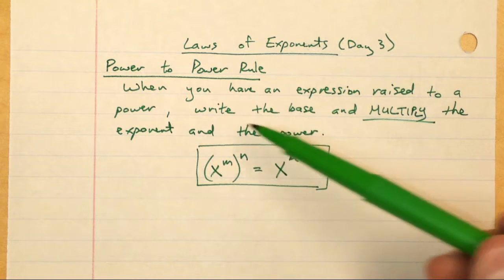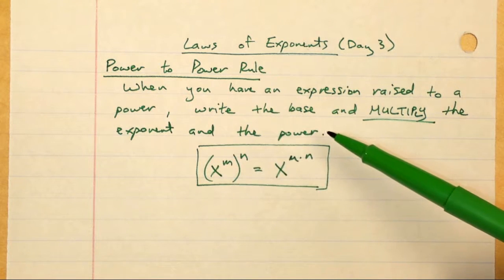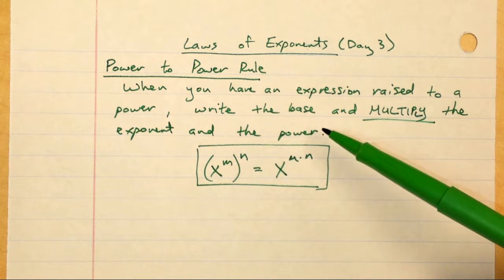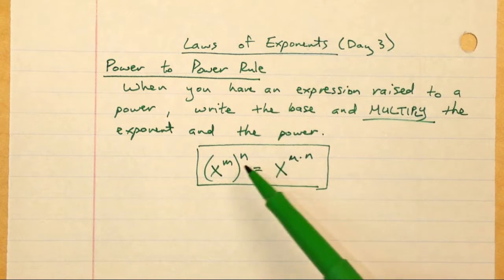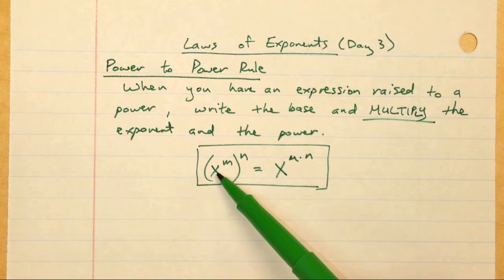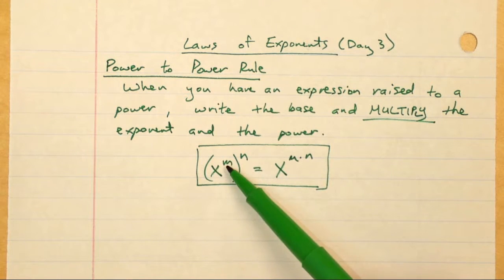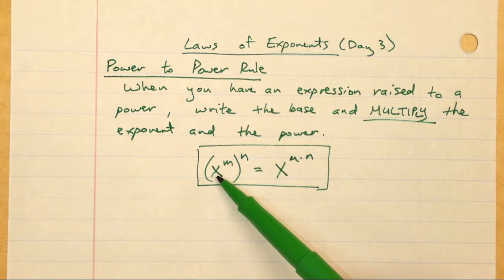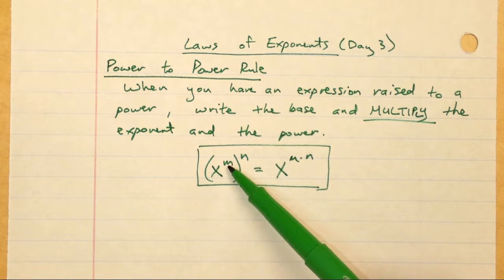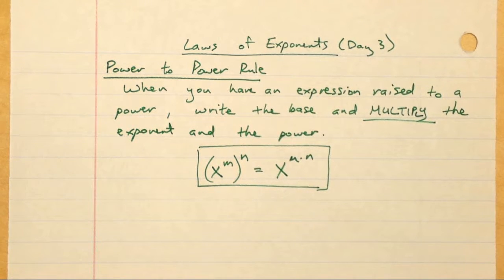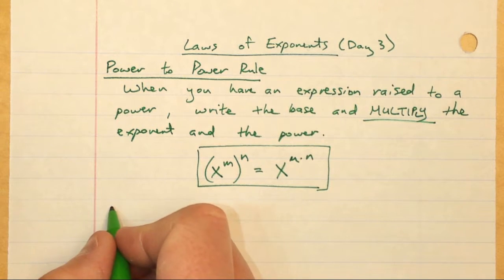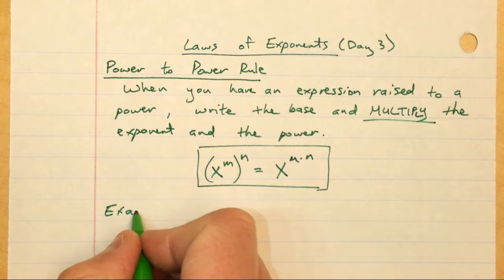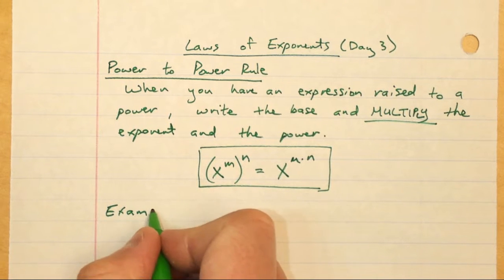By the way, power and exponent can be used interchangeably. So if I have x raised to the power of M and all this is raised to the power of N, or I could say x raised to the exponent of M and all this is raised to the exponent of N — I can use those interchangeably. So I'm going to do a couple of examples here and then I'm going to call it quits. The note should be relatively short.